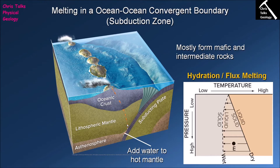This mafic magma rises up through the mantle, goes into the crust, and forms volcanoes at the surface. However, there is a problem: down here we know we're producing mafic magma, but the magma that comes out of the volcanoes is intermediate. So clearly something is happening during the magma's journey from depth to the surface.